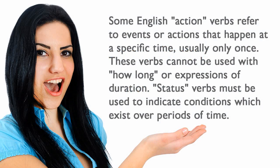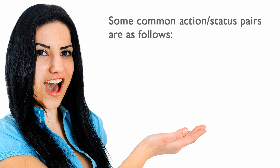Action vs. Status. Some English action verbs refer to events or actions that happen at a specific time, usually only once. These verbs cannot be used with 'how long' or expressions of duration. Status verbs must be used to indicate conditions which exist over periods of time. Some common action-status pairs are as follows.